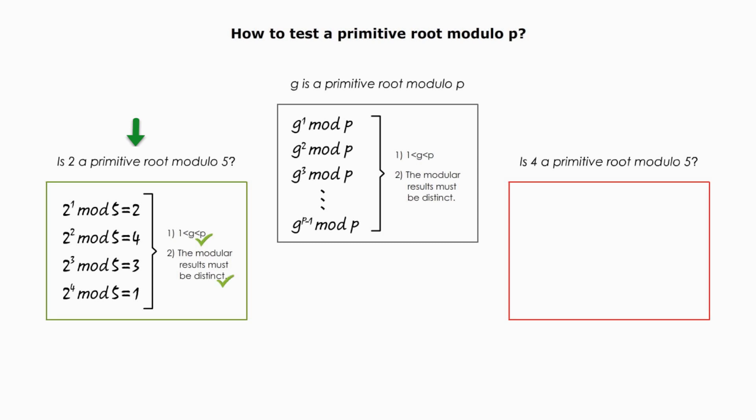The second condition, the modular results, 1, 2, 3, 4, are distinct. There's no duplicate. Thus, the second condition is met. Both conditions are met. And we can say 2 is a primitive root modular 5.